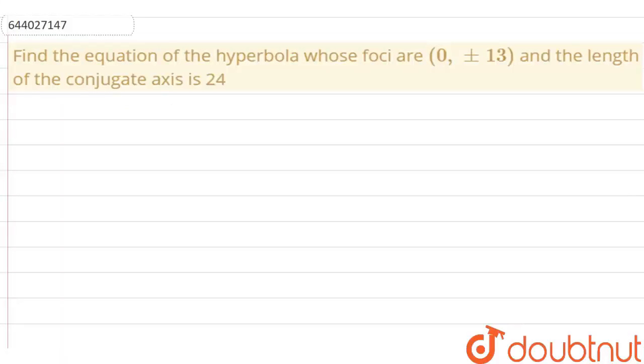The question says find the equation of the hyperbola whose foci are (0, ±13) and the length of the conjugate axis is 24.